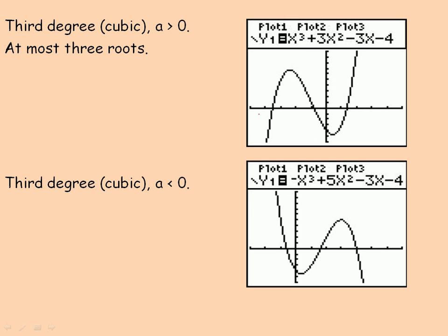The leading coefficient in the bottom example is negative. It's still a cubic, and this one crosses at most three places, and like the examples above, I could make it so that it has actually two roots or even one. It has at most three roots.